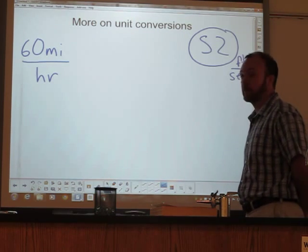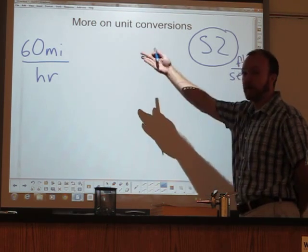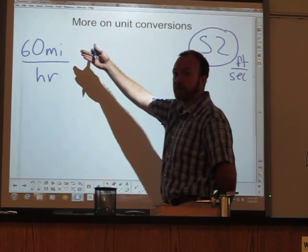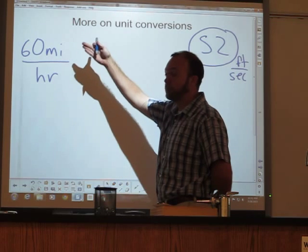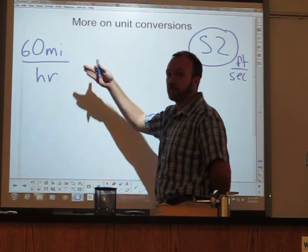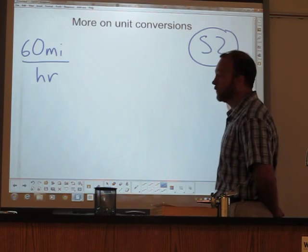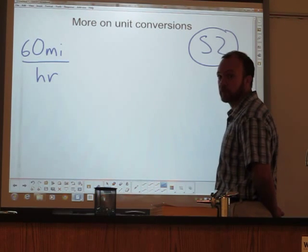The reason this is slightly more complicated is instead of having just one simple unit, we have a combined unit. So here we have a distance and a time. The dimension of this measurement is distance over time, miles per hour. The dimension of our answer, since we're just converting units, is still distance over time.